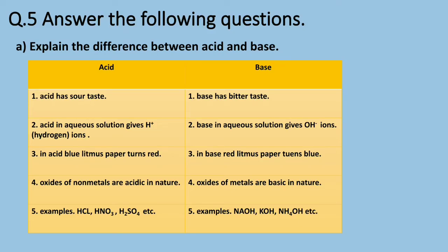Question five (a): explain the difference between acid and base. Acid has a sour taste; base has a bitter taste. Acid in aqueous solution gives hydrogen ions (H+); base in aqueous solution gives hydroxide ions (OH−). In acid, blue litmus paper turns red; in base, red litmus paper turns blue. Oxides of non-metals are acidic; oxides of metals are basic. Examples of acids: HCl, HNO3, H2SO4. Examples of bases: NaOH, KOH, NH4OH.